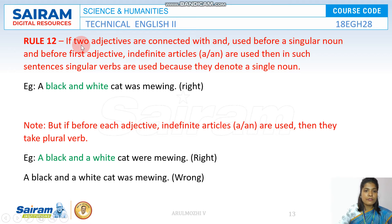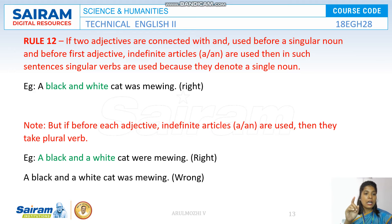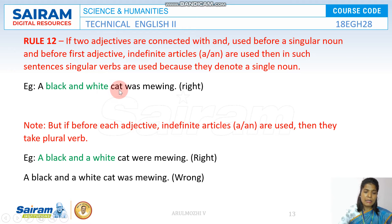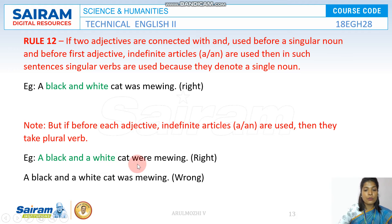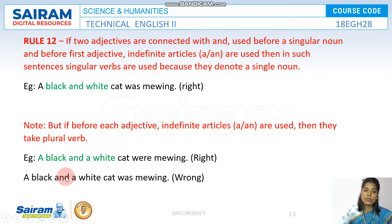Rule number 12: If two adjectives are connected by 'and' with only one article before them, it means the two adjectives refer to only one person, object, or animal. For example: 'A black and white cat was mewing' — one cat with both colors patched together. But if you use two different articles before the adjectives, it means two different animals: 'A black and a white cat were mewing.' Note: saying 'a black and a white cat was mewing' is wrong.